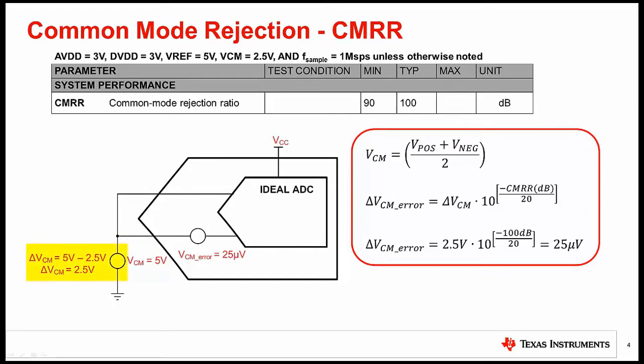In this example, if we want to sweep the common mode voltage from 5 volts to 2.5 volts, the change in common mode voltage is 2.5 volts. Substituting these numbers into the common mode rejection equation, we can see that the common mode error is 25 microvolts.